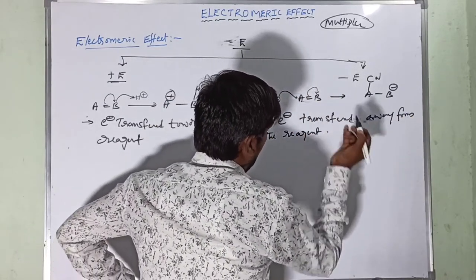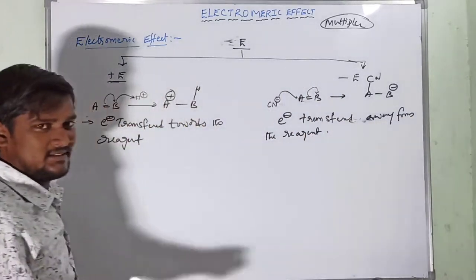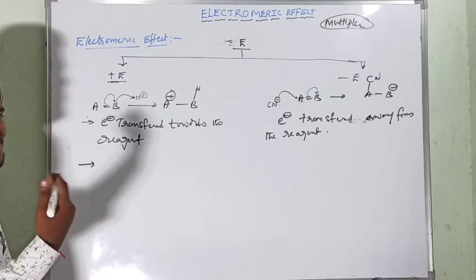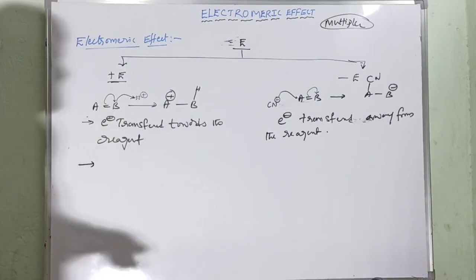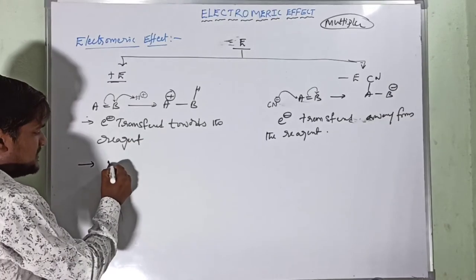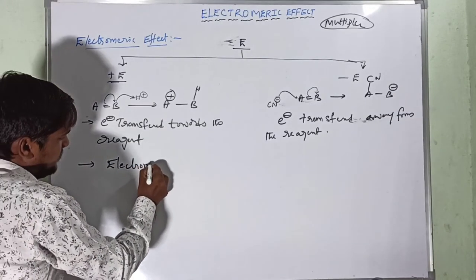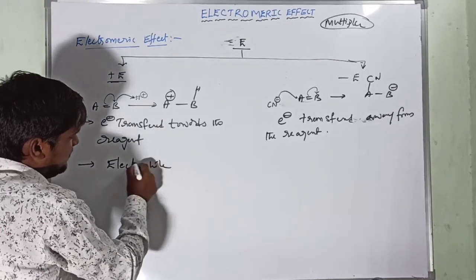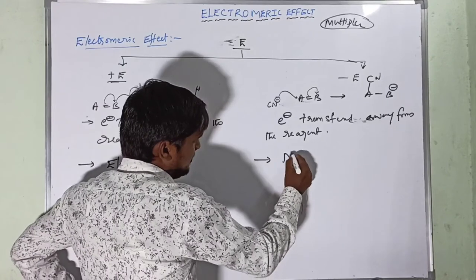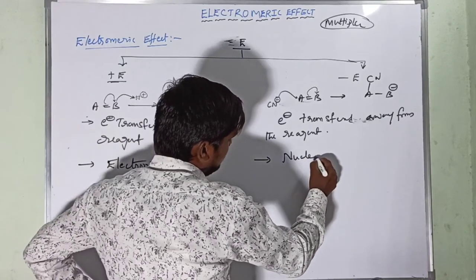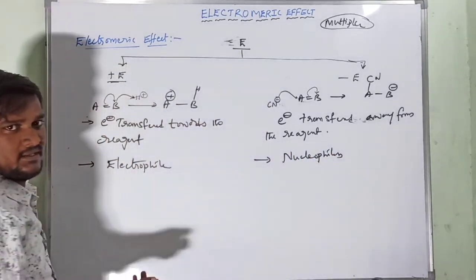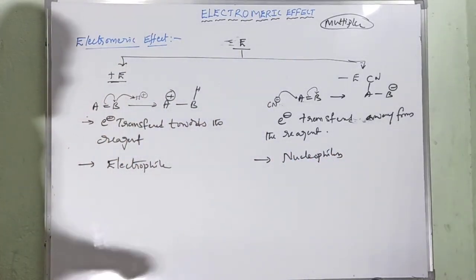To summarize: in the presence of H⁺ (electrophiles) we observe the +E effect; in the presence of nucleophiles we observe the −E effect.